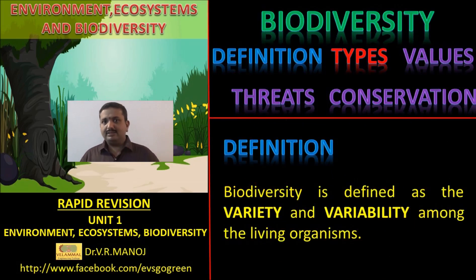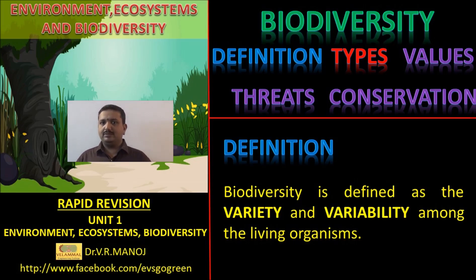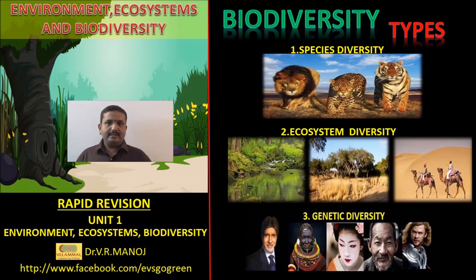Following environment and ecosystems, we have biodiversity. The definition of biodiversity is the variety and variability amongst the different organisms found on this planet. The types of biodiversity are: species biodiversity, ecosystem biodiversity, and genetic biodiversity.